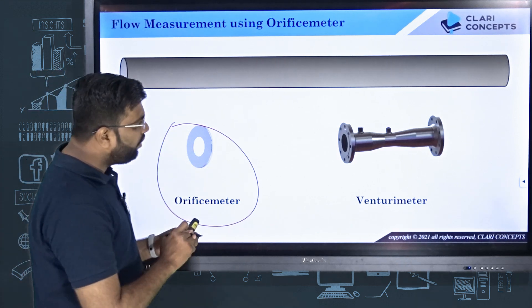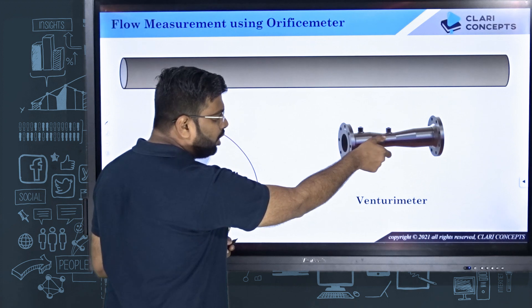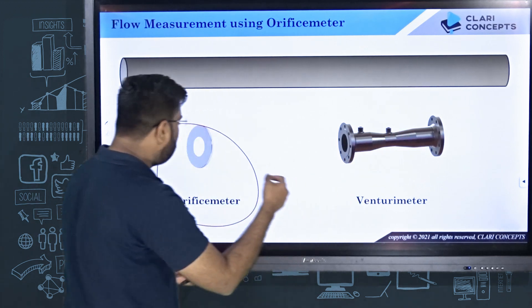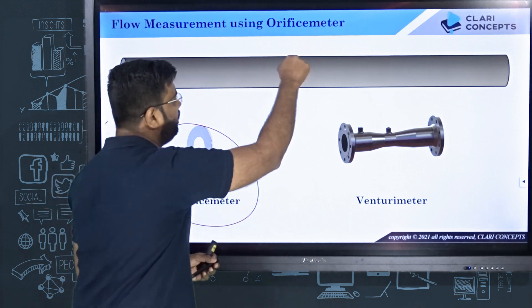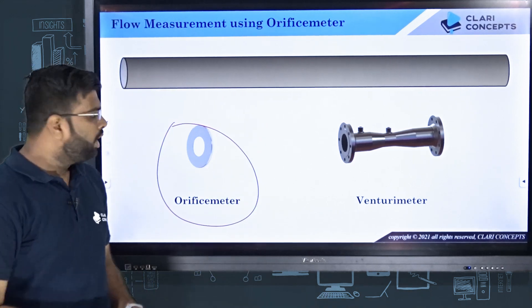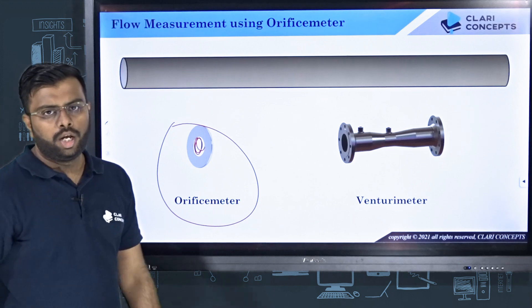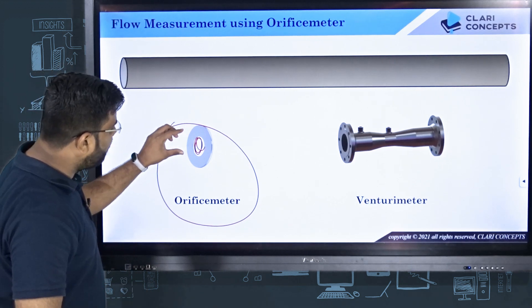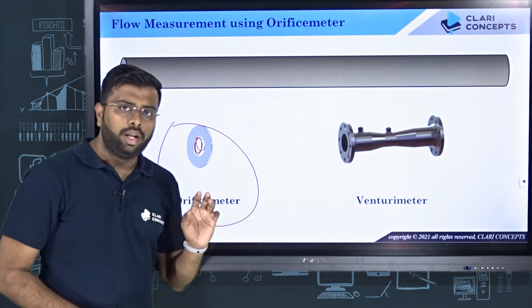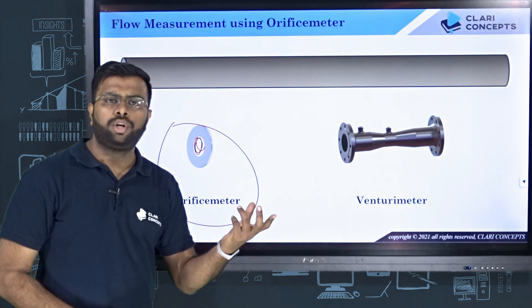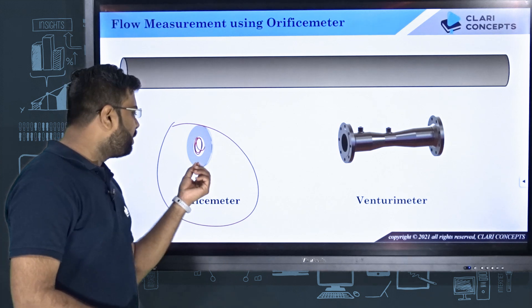Instead of having this gradual decreasing cross-sectional area and preparing the throat and then increasing it, you simply drill a hole in a circular disc and put that disc in the center of the pipe. All the entire flow will pass through the center hole. You have drastically decreased the cross-sectional area through which fluid is flowing. You can also use that to measure the flow rate.